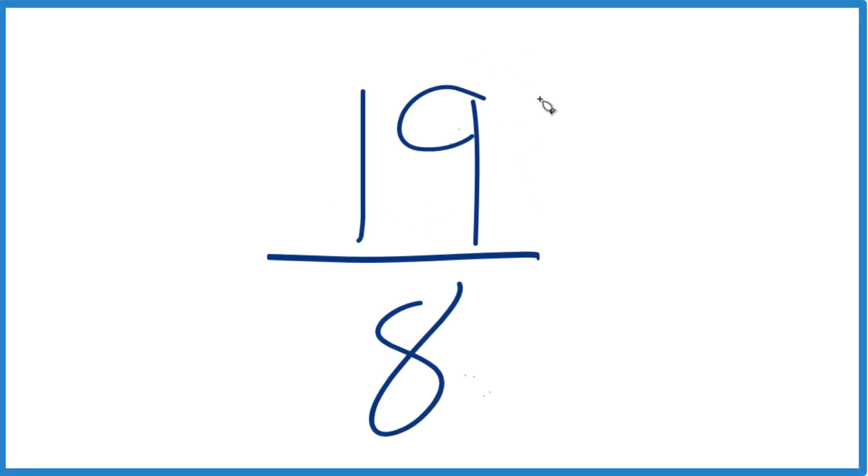Let's take a look at how we can simplify the fraction 19 eighths and write it as a mixed number. So when we're simplifying a fraction like this, we need to find a whole number that goes evenly into both 19 and 8. That would be our common factor.